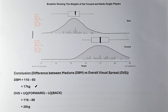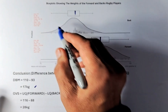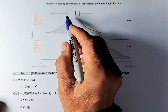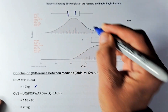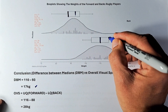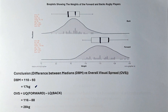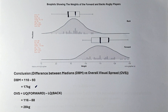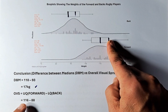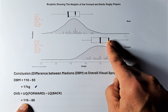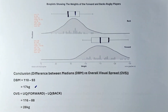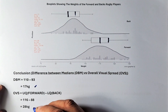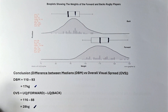To get the overall visual spread, we look at the box and whiskers and we find the smallest to the biggest. The smallest is the lower quartile for the back and the upper quartile of the forward. So we're going to take the upper quartile of the forward, which is 116 kg, and the lower quartile of the back, which is 88 kg, and we come up to a result of 28 kg.